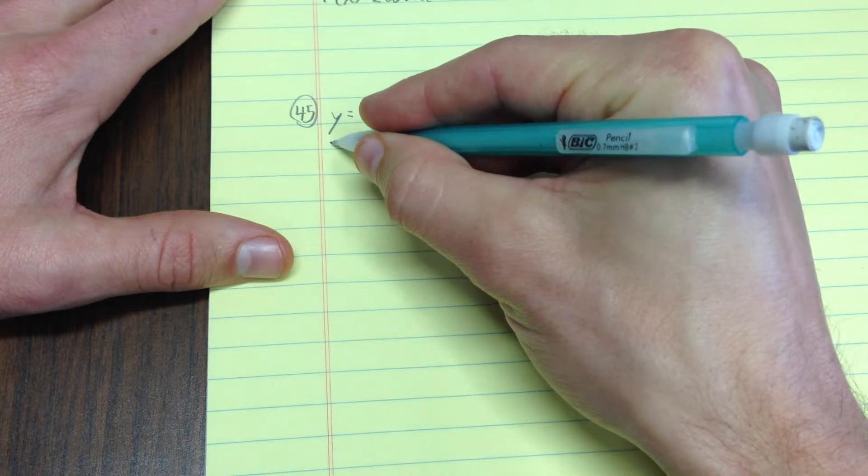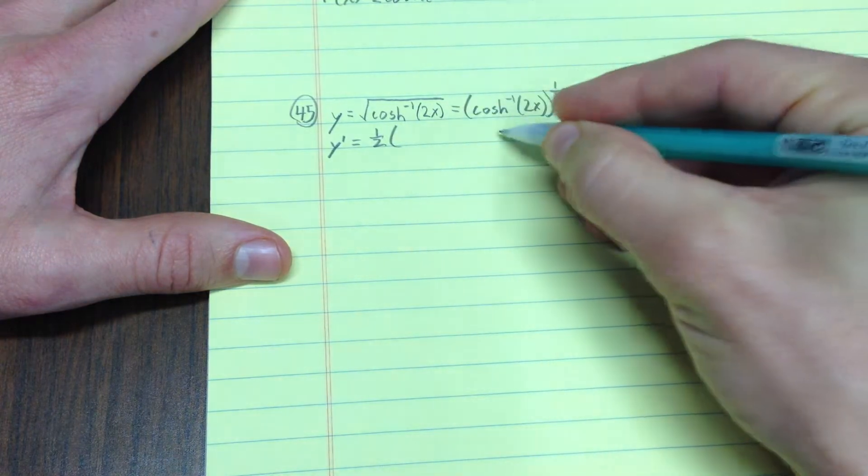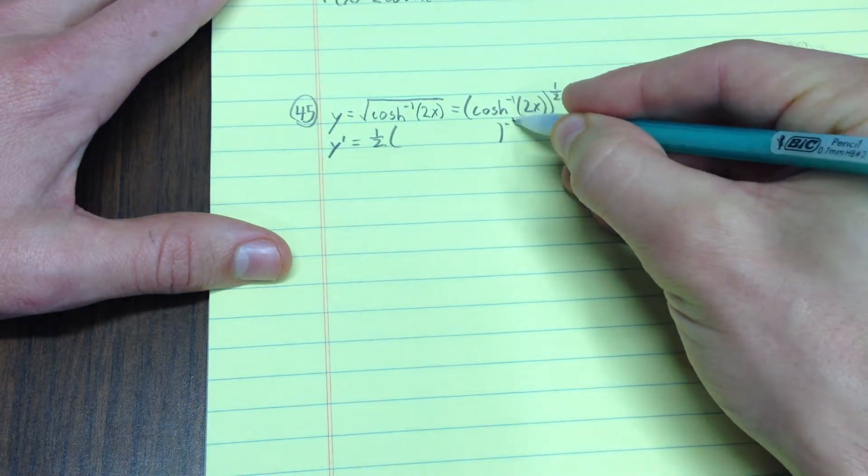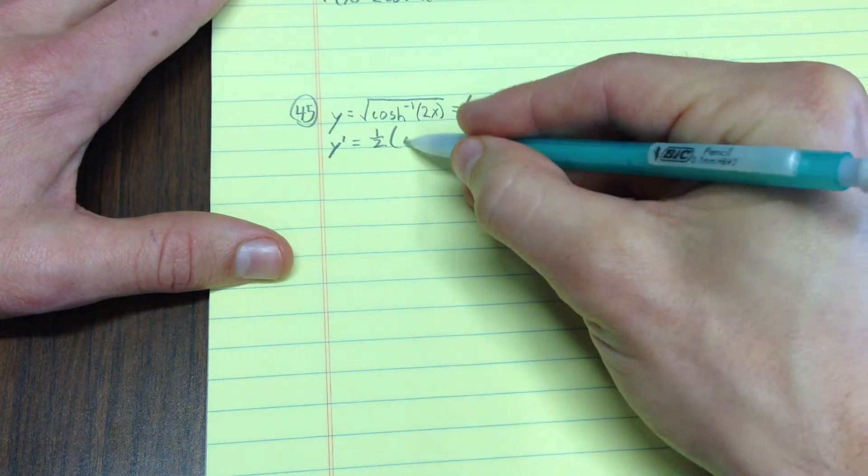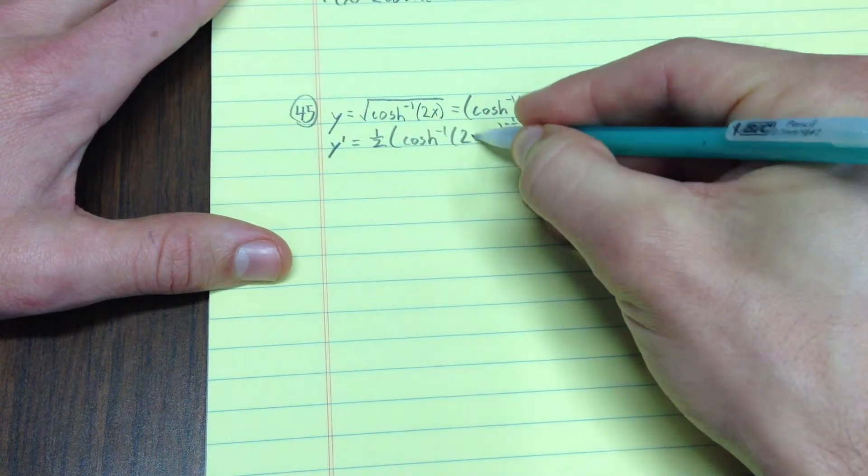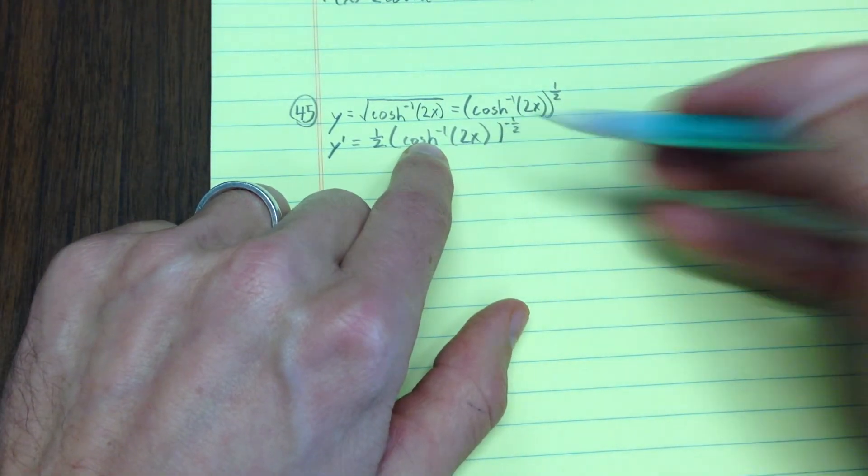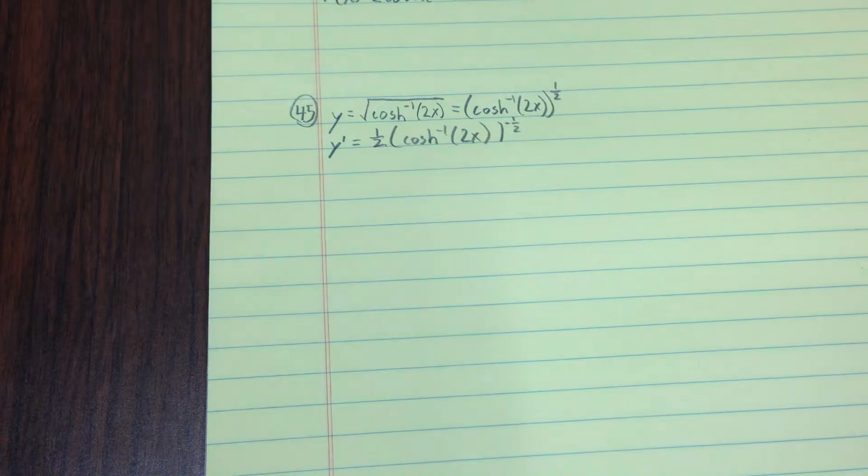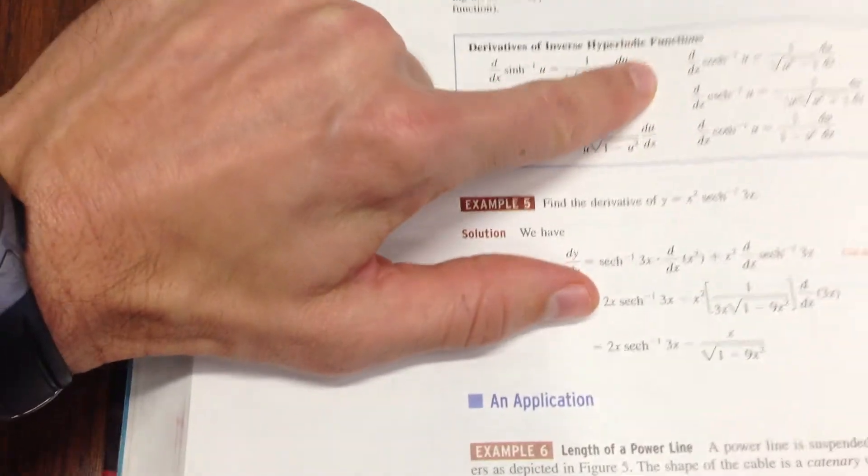I have y prime equals 1 half, and I've got my inside piece to the negative 1 half. You could think of that as 1 over the square root of cosh inverse of 2x. Now, I get to take the derivative of that inside piece. The derivative of cosh inverse, you may or may not know, but if you look it up in some reference table, you can spot it.